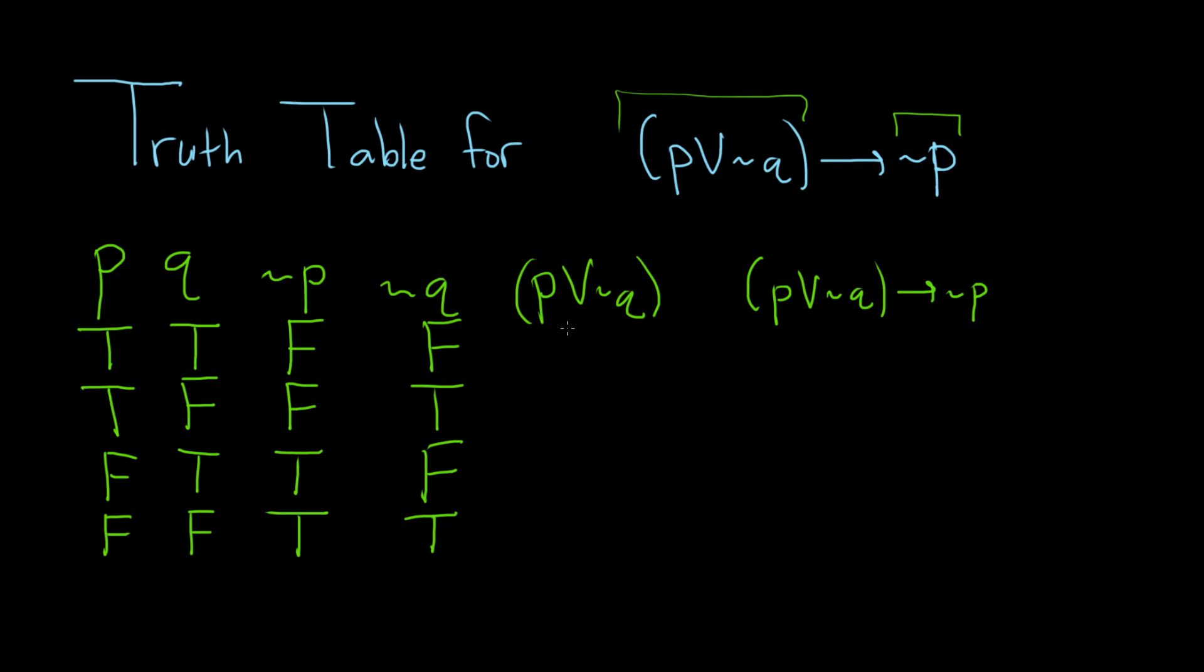For P or not Q, this statement will be true when at least one of these is true. So we look at the column for P and the column for not Q. And as long as one of these is true, the whole statement is true. So P is true so it's true. In this case they're both true, the P and the not Q. So it's true. In this case here it's false and false. So they're actually both false. So this is actually false. And in the last case the not Q is true. So this is true.